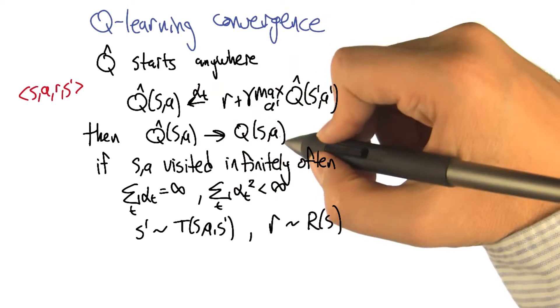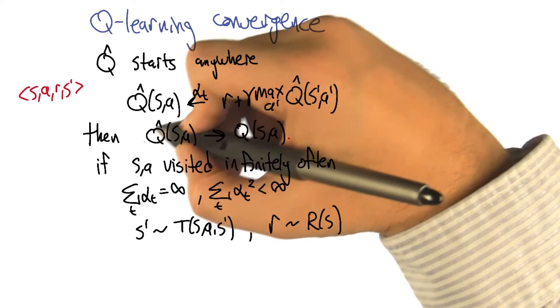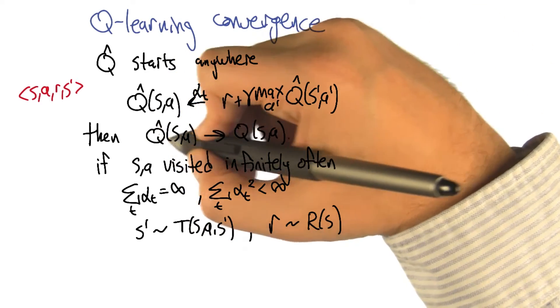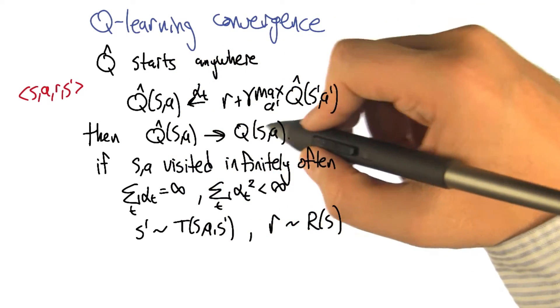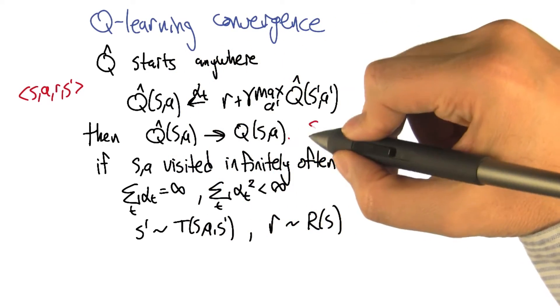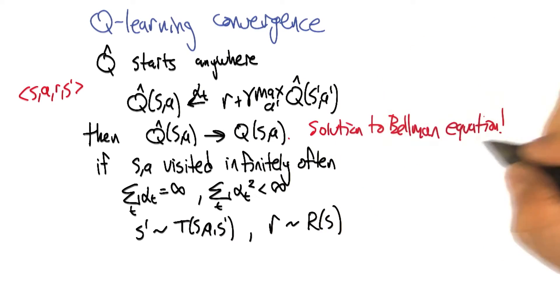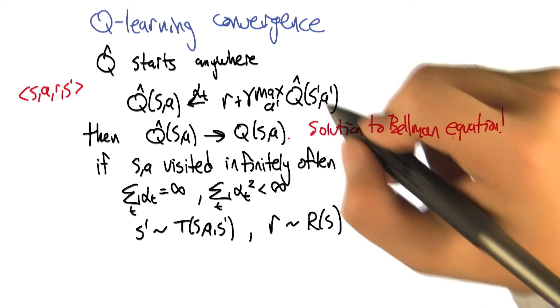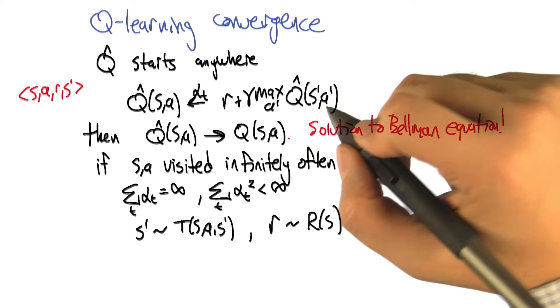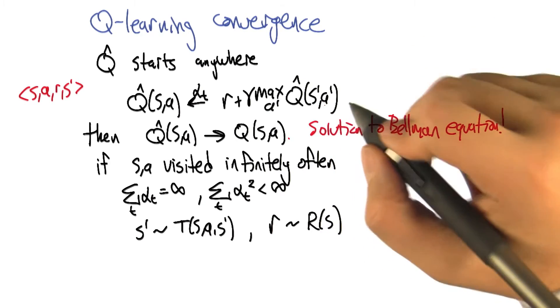Then, as long as we do that, this estimate — this Q-hat(S, A) — goes to Q(S, A), the actual solution to the Bellman equation. And I write this with an exclamation mark because it's like, it's one line of code.